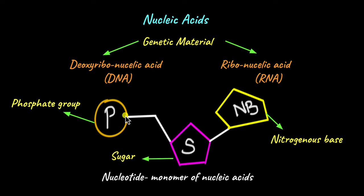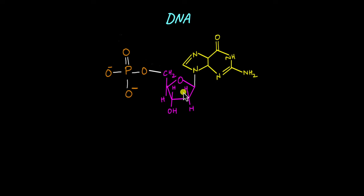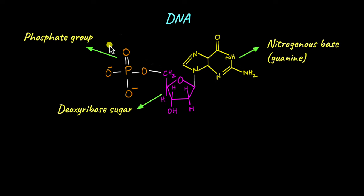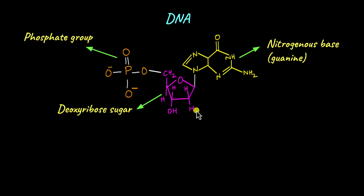Now that we are familiar with the basic nucleotide structure of a nucleic acid, let's learn more about the nucleotide structure of DNA. A DNA nucleotide has a phosphate group, a nitrogenous base, and a pentose sugar called deoxyribose. It is called deoxyribose because, when compared with ribose — the sugar found in RNA — there is no oxygen here that would form a hydroxyl functional group (OH). Instead, it is just a hydrogen group. So DNA is made up of a phosphate group attached to a deoxyribose sugar, which is in turn attached to a nitrogenous base.